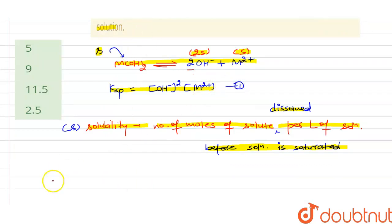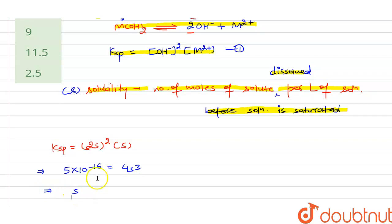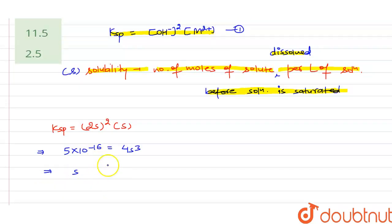The value of Ksp equals the concentration of OH⁻ squared times the concentration of M²⁺, which gives (2s)² × s = 4s³. The solubility product value is given as 5 × 10⁻¹⁶, so 4s³ = 5 × 10⁻¹⁶.